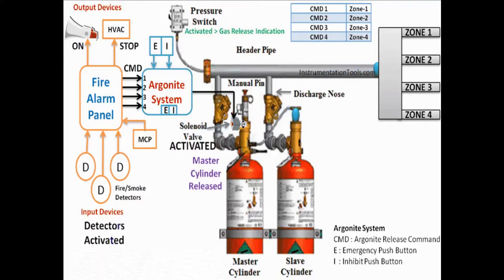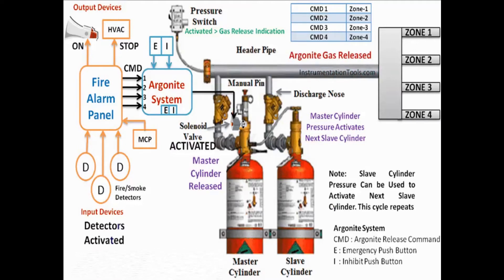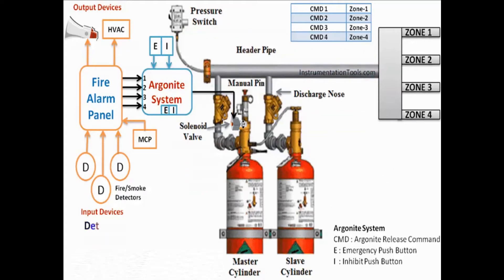In the animation we consider four zones. Zone means areas, locations, or rooms. If fire and smoke detectors are activated in zone 4, then the fire panel sends command 4. The fire alarm panel can send commands from CMD1 to CMD4 depending on the fire and smoke detector activation in the respective zone.